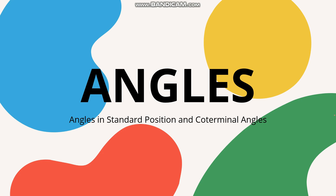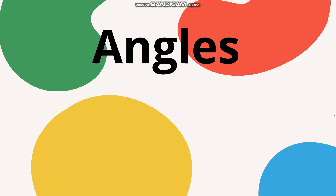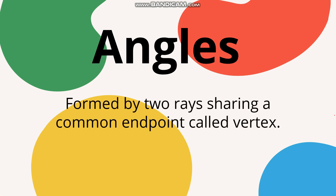For today's lesson we will be discussing angles — angles in standard position and co-terminal angles. Let's start by recalling the definition of angles. An angle is formed by two rays sharing a common endpoint called the vertex. For example, here is one ray and here is the other one, and they share a common endpoint, which is the vertex.